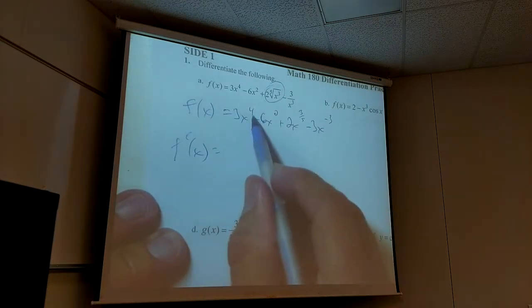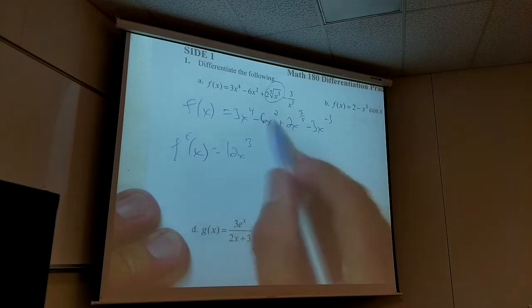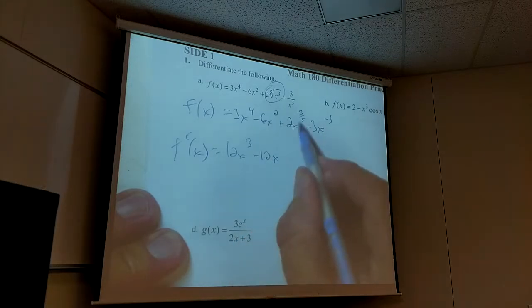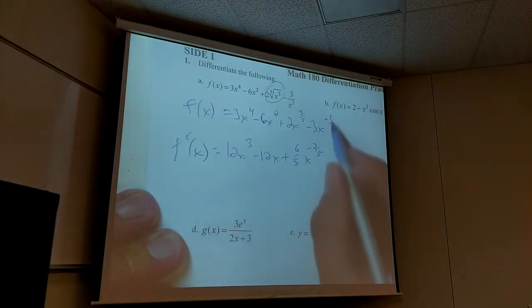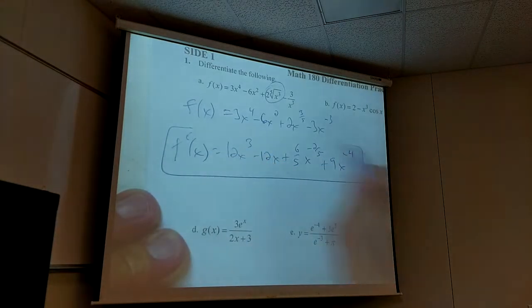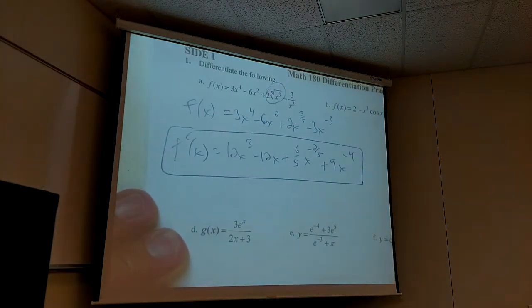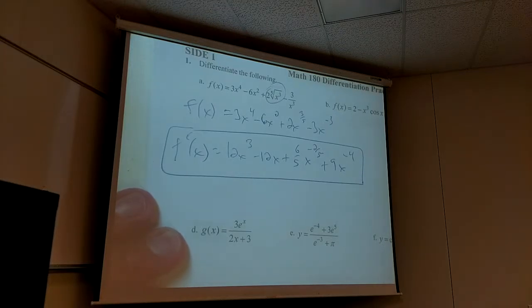This becomes 12x cubed. That's 12x. 6 fifths x to the? Good. Negative 2 fifths. Plus 9x to the negative 4. All right, that one should have hopefully been no big deal.